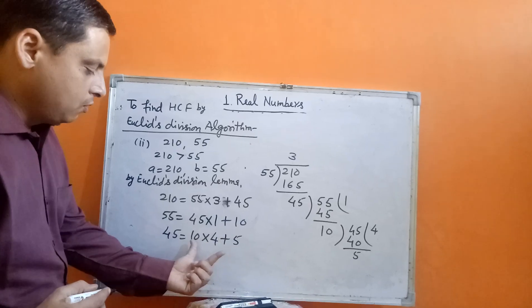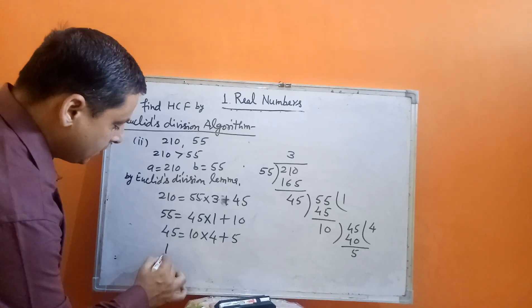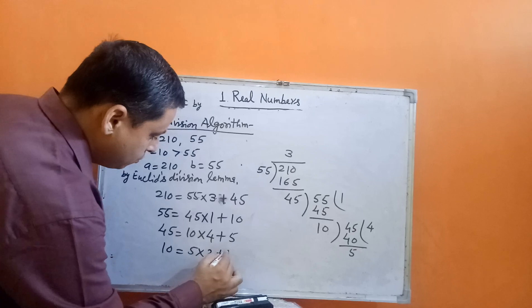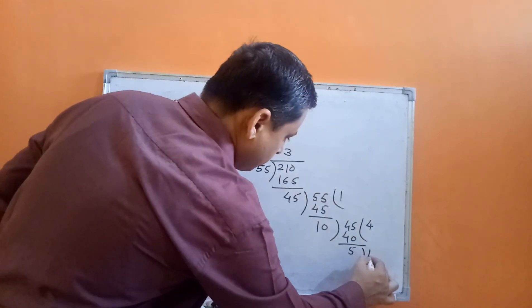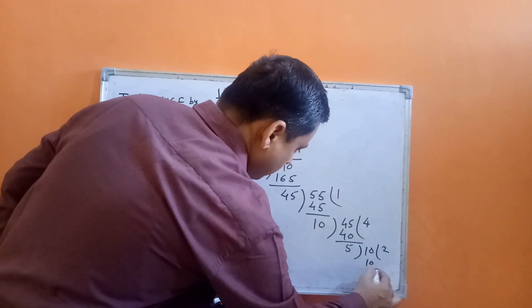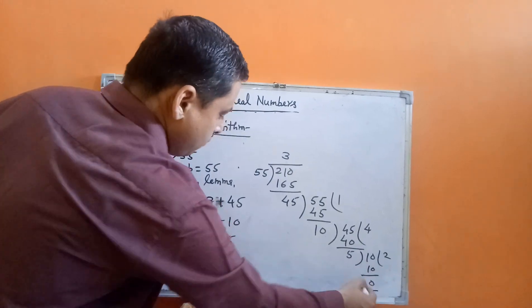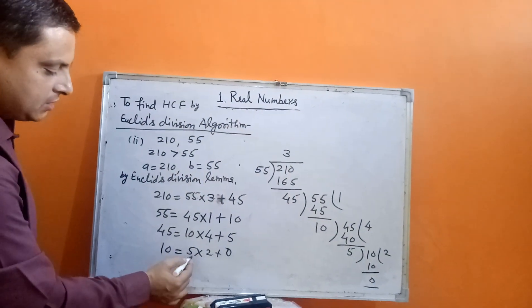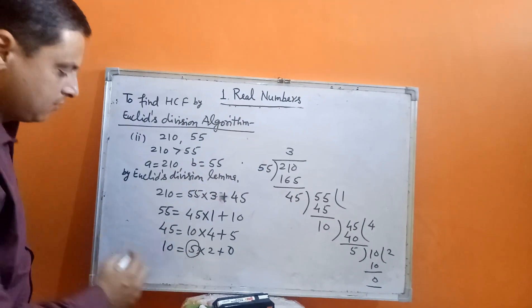R is not 0, therefore we will apply again: 10 equals 5 into 2 plus 0. At this step, remainder is 0. So, the divisor at this step will be the HCF. Therefore, the HCF of 210 and 55 will be 5.